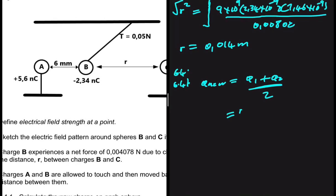For A, we can say that 5.6 times 10 to the minus 9 plus Q2, which is B, minus 2.34 times 10 to the minus 9, divided by 2. The answer here should equal 1.63 times 10 to the minus 9 coulombs.